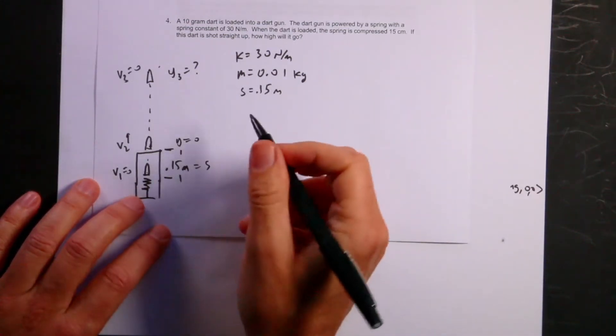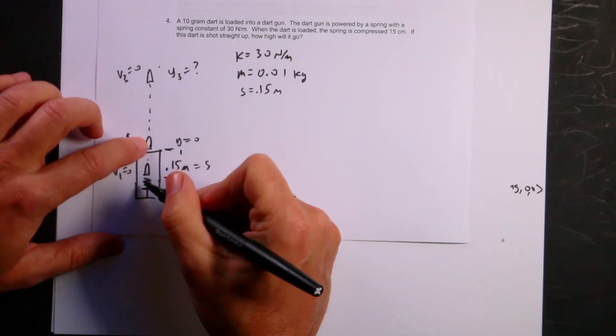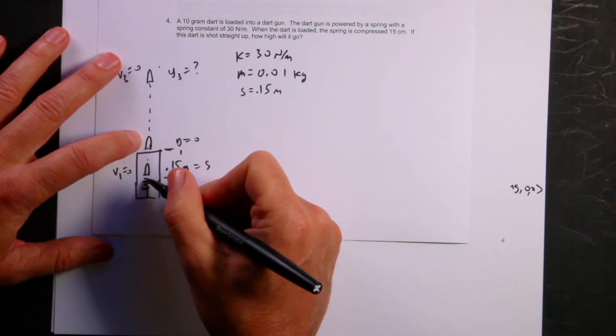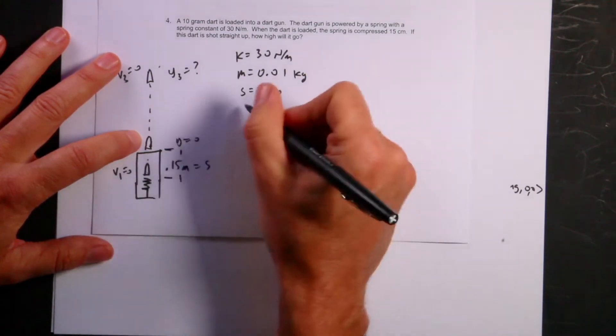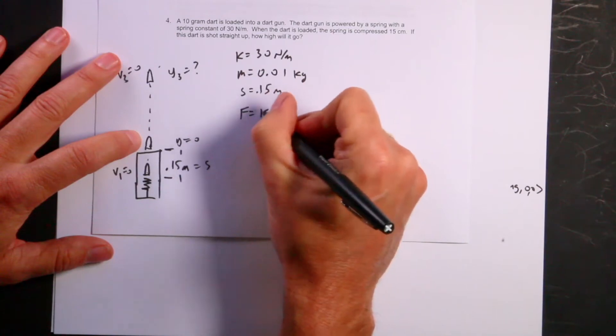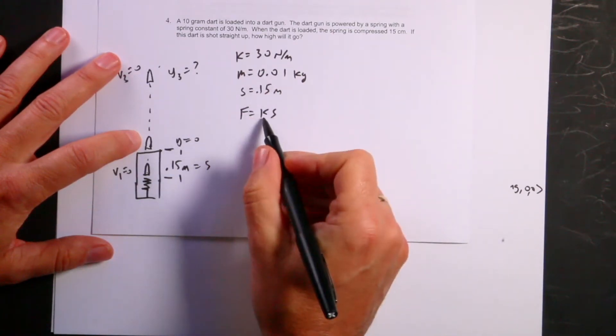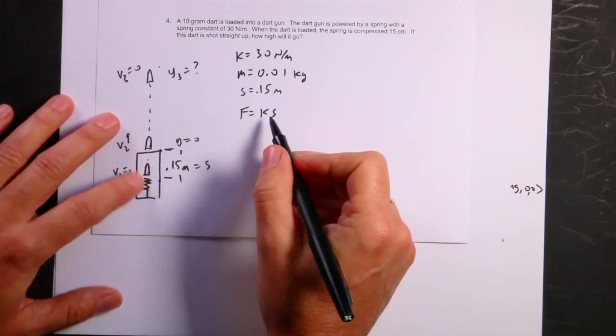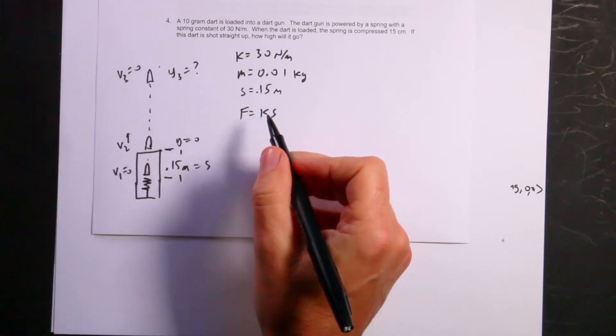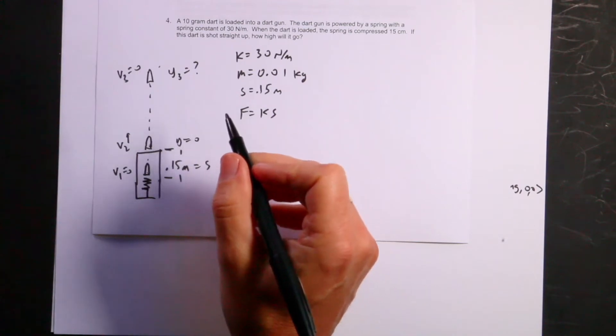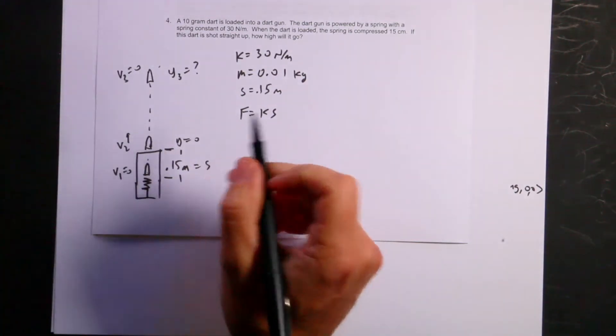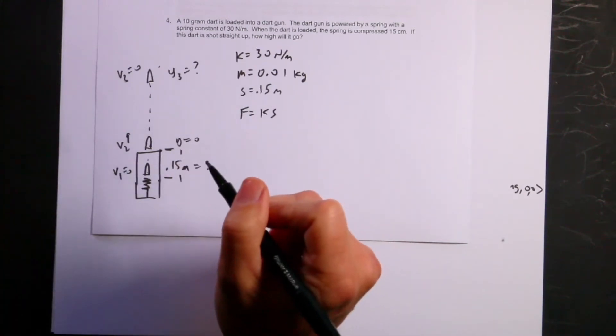If you want to find out how fast the dart's going right here, you have a problem. Because the force the spring pushes changes. Remember, the magnitude of a spring force is F equals K times S. So the less this gets compressed, the less the force on it. This is a non-constant force situation. You can solve it. You could do the average force, and that would work. There's a couple tricks you could integrate.